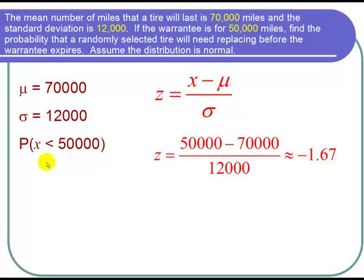So I can convert this probability written in terms of X, which is a normal distribution variable, as a probability in terms of Z, which is a standard normal distribution variable, and write that we want the probability that Z is less than negative 1.67.